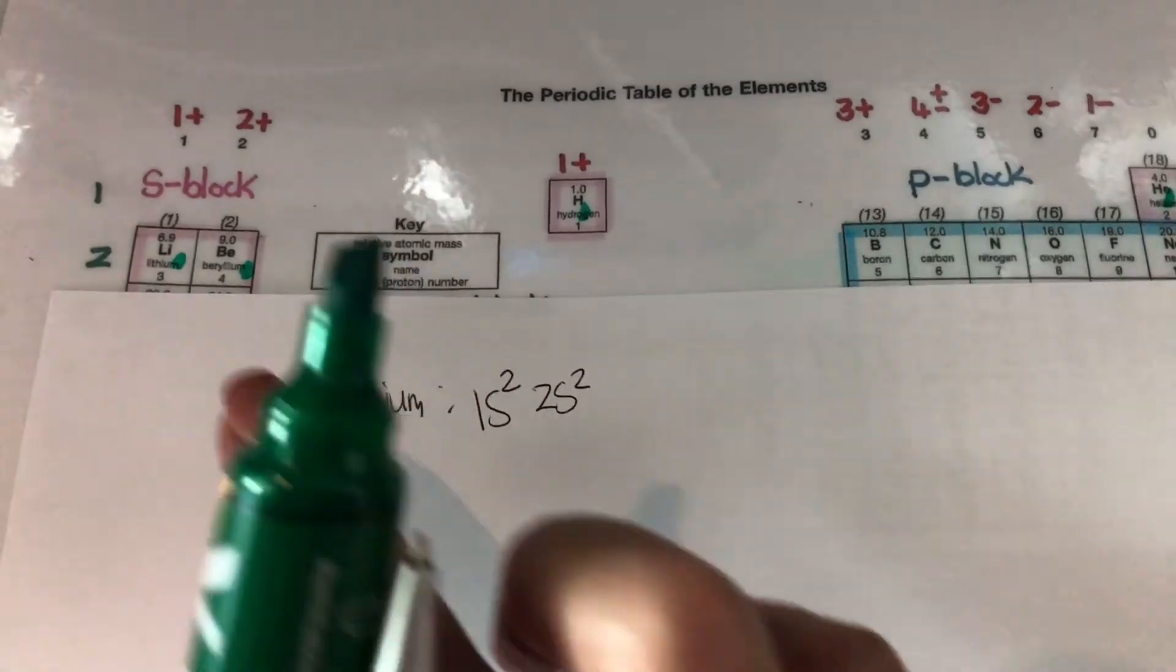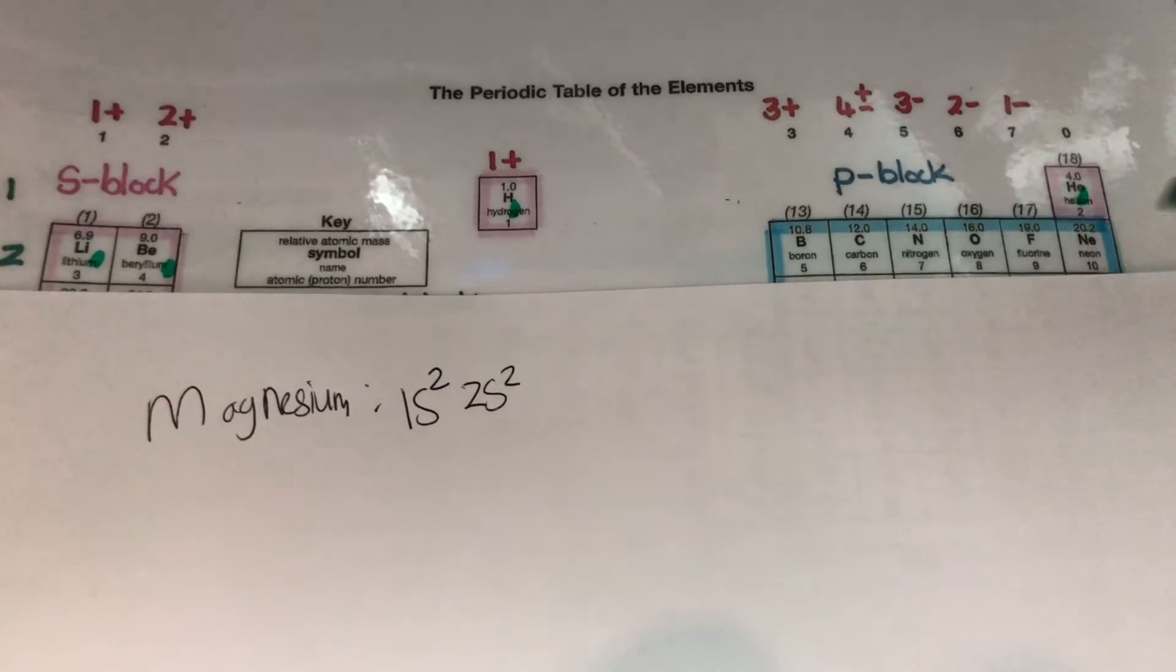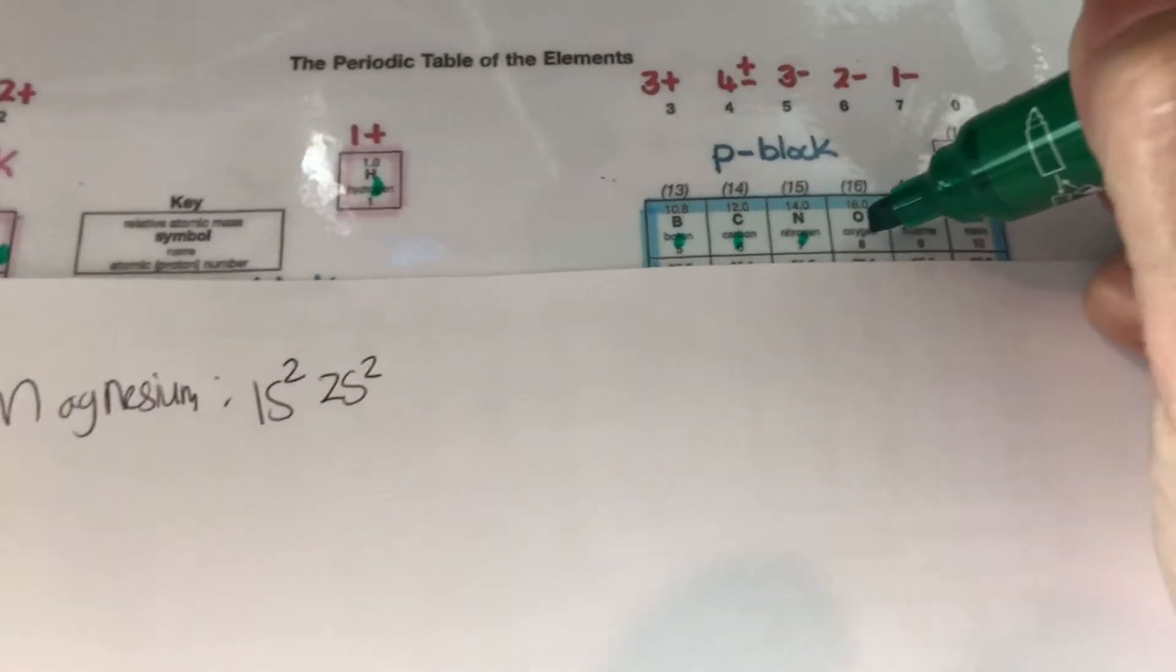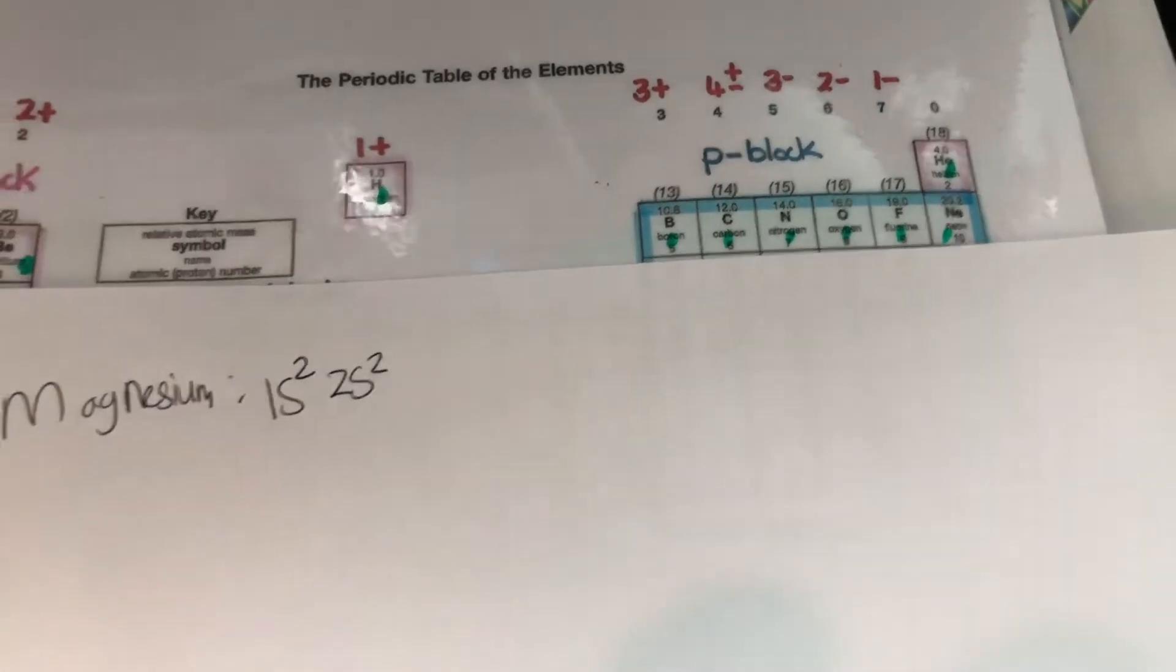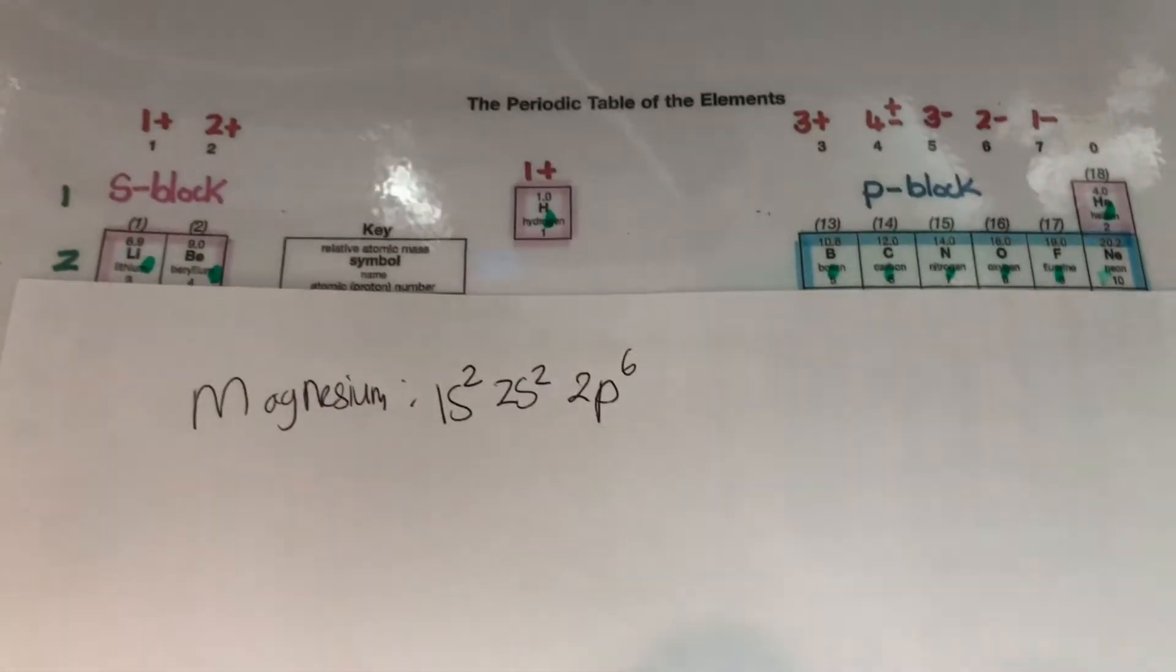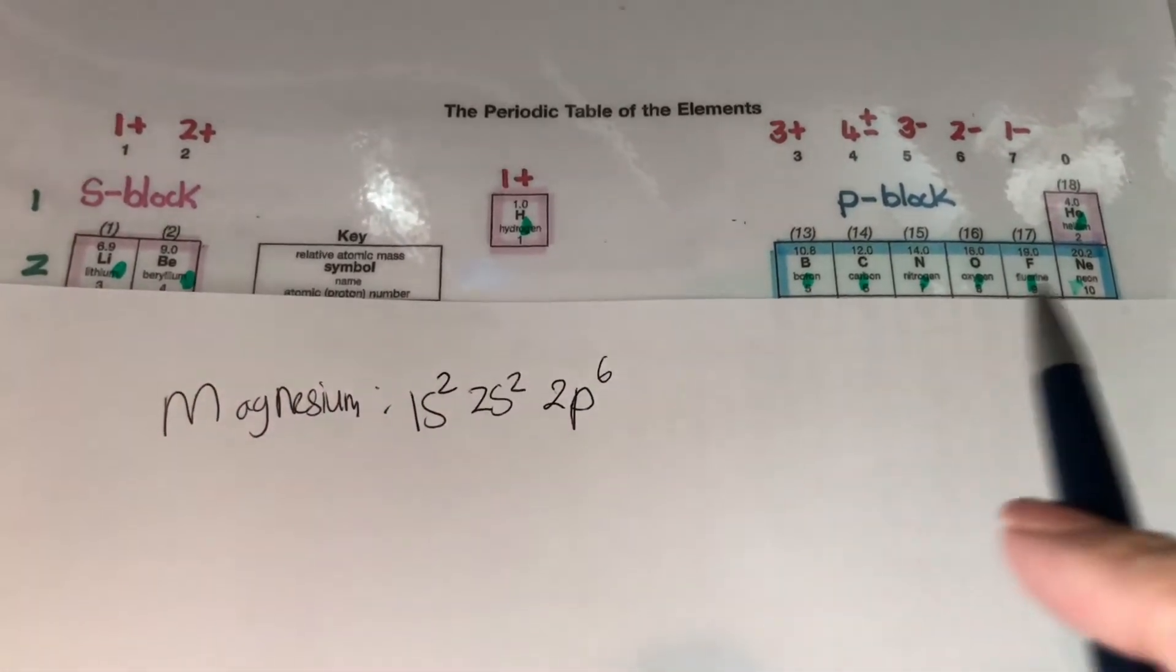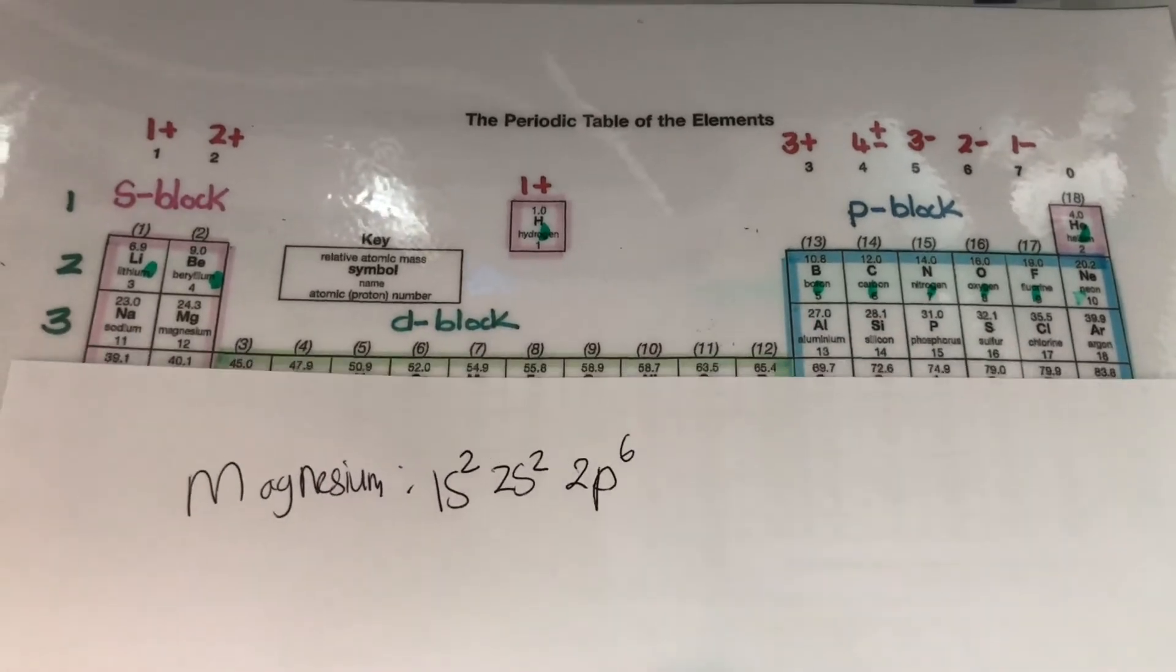Then from 2S I'm going to go to 2P. So 2P is going to be 1, 2, 3, 4, 5, 6. Right so that would be 2P6. How do I know that? Second energy level or second period and this is the P block 1, 2, 3 and there's six electrons in it. I'm still not at magnesium.